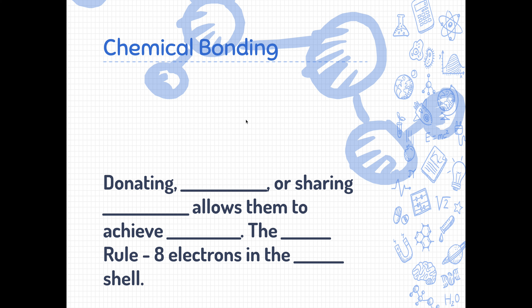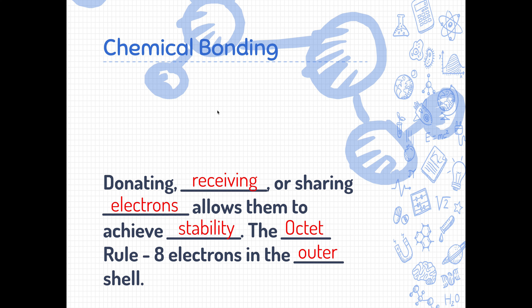Everybody wants to be just like the noble gases. The noble gases are stable just how they are — they don't want to interact with any other elements. They are happy being single, whereas all of the other elements are unstable and they need to form relationships with one another to become stable. So elements and atoms can become stable by donating, receiving, or sharing electrons, and that allows them to achieve stability. This is the octet rule, which means all atoms are trying to get to that eight-electron outer shell stability.